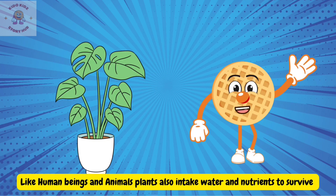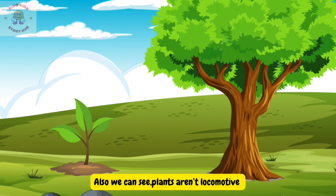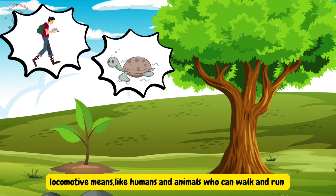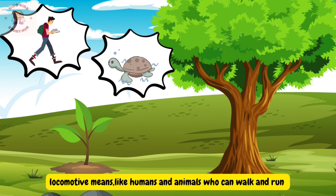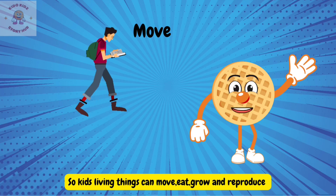Like human beings and animals, plants also intake water and nutrition to survive. When it comes to air, plants inhale carbon dioxide and exhale oxygen. Also, we can see plants are not locomotive — locomotive means like humans and animals who can walk and run — but plants do not move from one place to another.